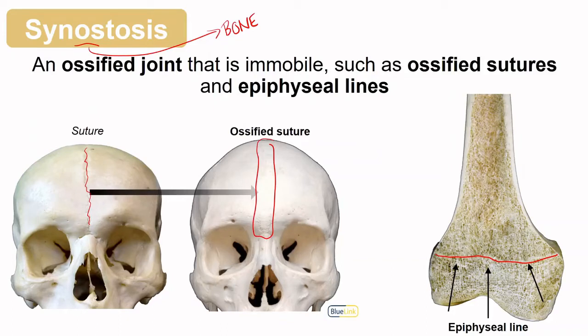One more time — when an epiphyseal plate ossifies, what type of ossification is that? That's endochondral ossification.